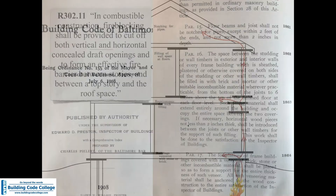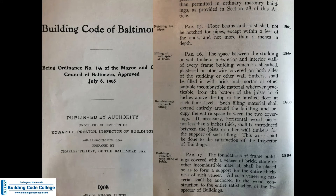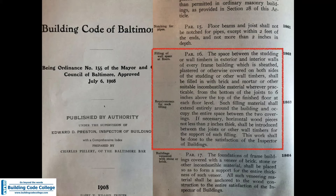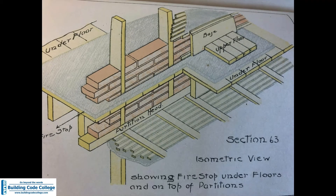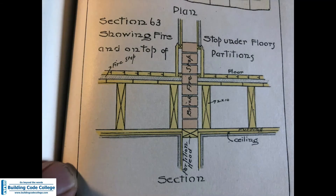Let's see how far back fire blocking goes. I am a collector of vintage code books — I've got over 500 vintage codes going back to my oldest, which is 1859. This is the 1908 City of Baltimore building code. Here you have your section on fire blocking, except back then the title was 'filling of wall space at floors.' If you read it, you can see some pretty shocking stuff. We're talking about putting brick and mortar inside the wall. It was such a big deal in 1908 that they actually had color drawings in the code book to show the importance of fire blocking.